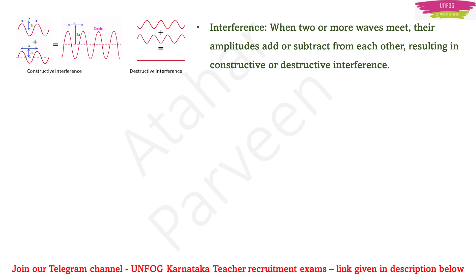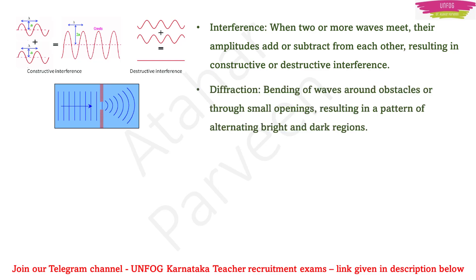When two or more light waves meet, their amplitudes added up or subtracted from each other will result in what we call constructive interference or destructive interference respectively. Whereas diffraction is the bending of waves around obstacles or through small openings, which will result in a pattern of alternating bright and dark fringes.